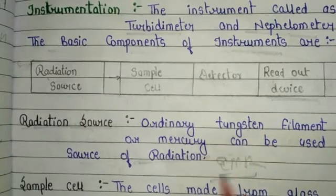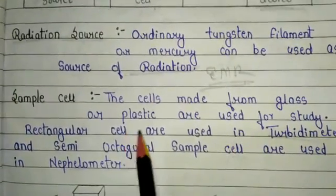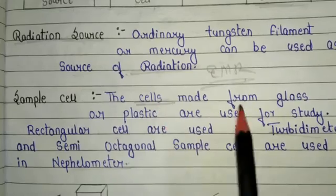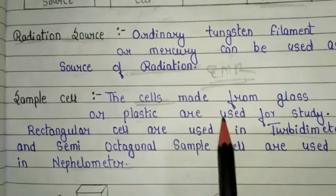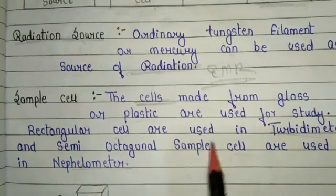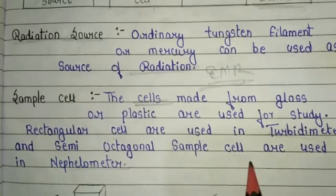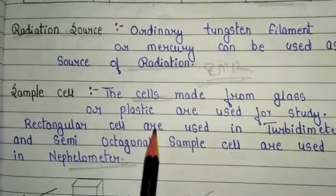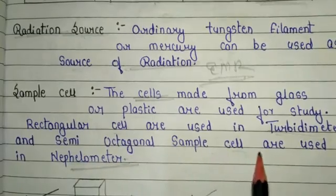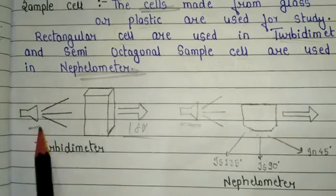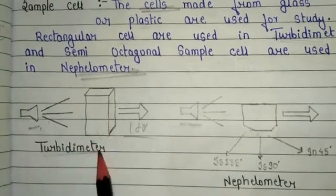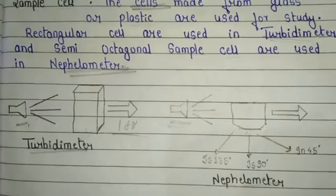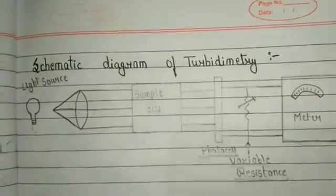For the sample cell: cells made from glass or plastic are used. Rectangular cells are used in turbidometry, and semi-octagonal sample cells are used in nephelometry. These are the two kinds of cells used in both instruments.